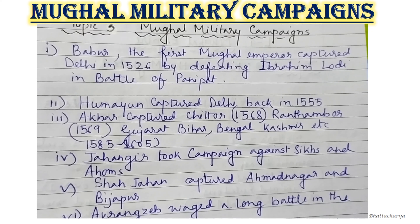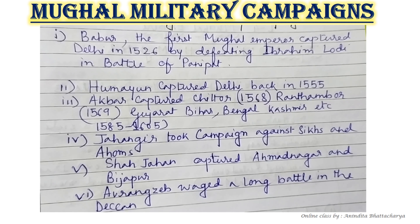The next topic is Mughal military campaigns, which means the Mughals' planned battles or wars against others. Babur, the first Mughal emperor, captured Delhi in 1526 by defeating Ibrahim Lodhi in the Battle of Panipat. Humayun captured Delhi back in 1555. Akbar captured Chitor in 1568, Ranthambore in 1569, and Gujarat, Bihar, Bengal, and Kashmir between 1585 and 1605. Jahangir took campaigns against the Sikhs and Ahoms. Shah Jahan captured Ahmednagar and Bijapur. Aurangzeb waged a long battle in the Deccan.